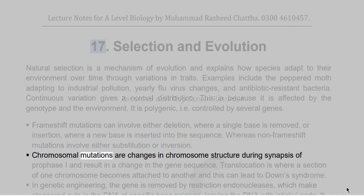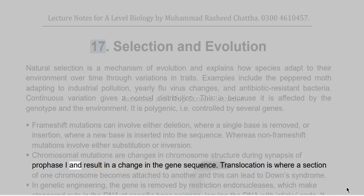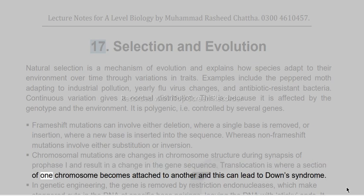Chromosomal mutations are changes in chromosome structure during synapses of prophase I and can result in a change in the gene sequence. Translocation is where a section of one chromosome becomes attached to another, and this can lead to Down syndrome.